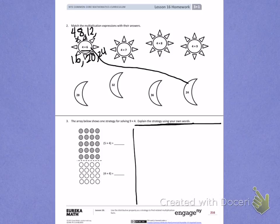The first thing I see is an array that shows 5 times 4. I'm going to skip count by 4s until I get my total for this section. 4, 8, 12, 16, 20.